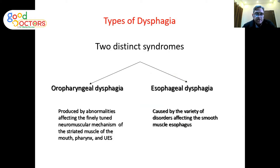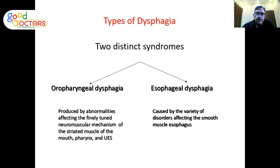We classify dysphagia into oropharyngeal — where the abnormality affects striated muscles of the mouth, pharynx, and upper esophageal sphincter — or esophageal dysphagia, which is caused by disorders affecting the smooth muscles of the esophagus itself. Our clinical approach will be based on these two phases.